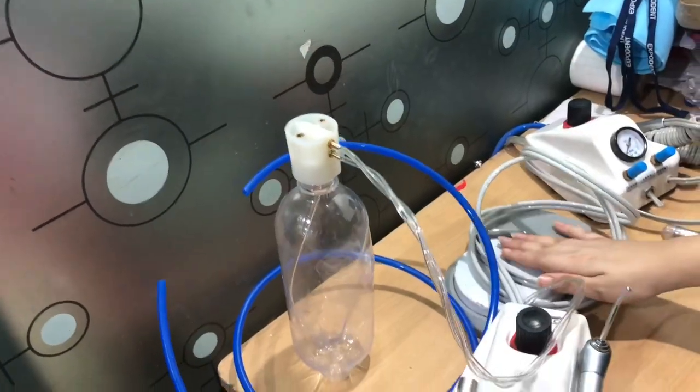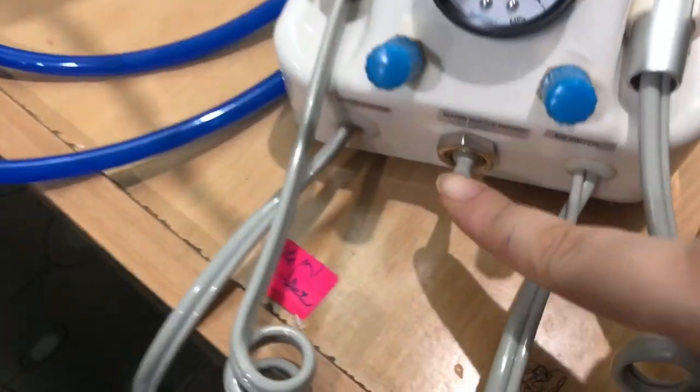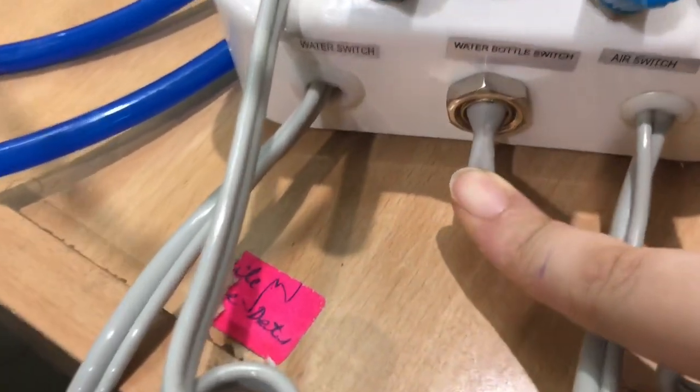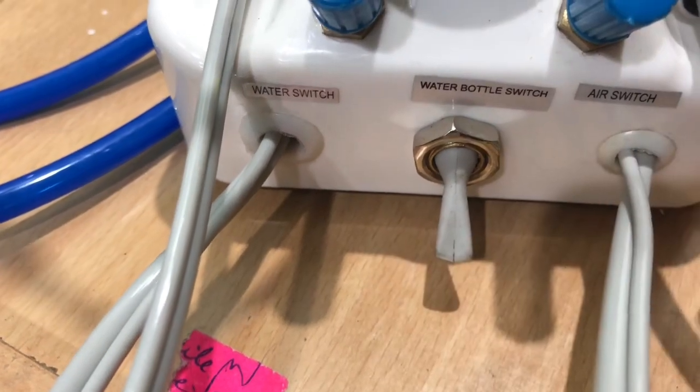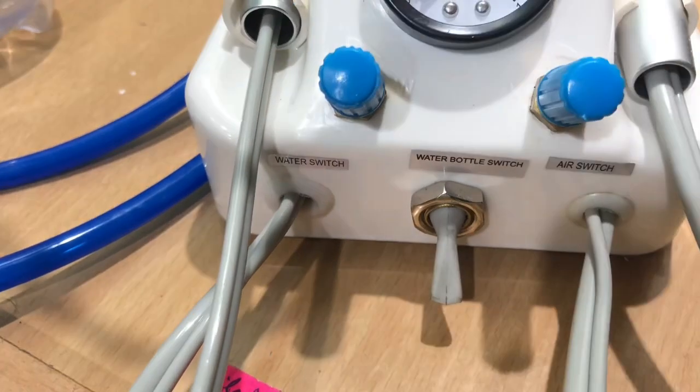This is the tube and this is the foot control. You can see what are the parts here. This is the water bottle switch, this is the air switch to control your air, and this is the water switch to control your water.